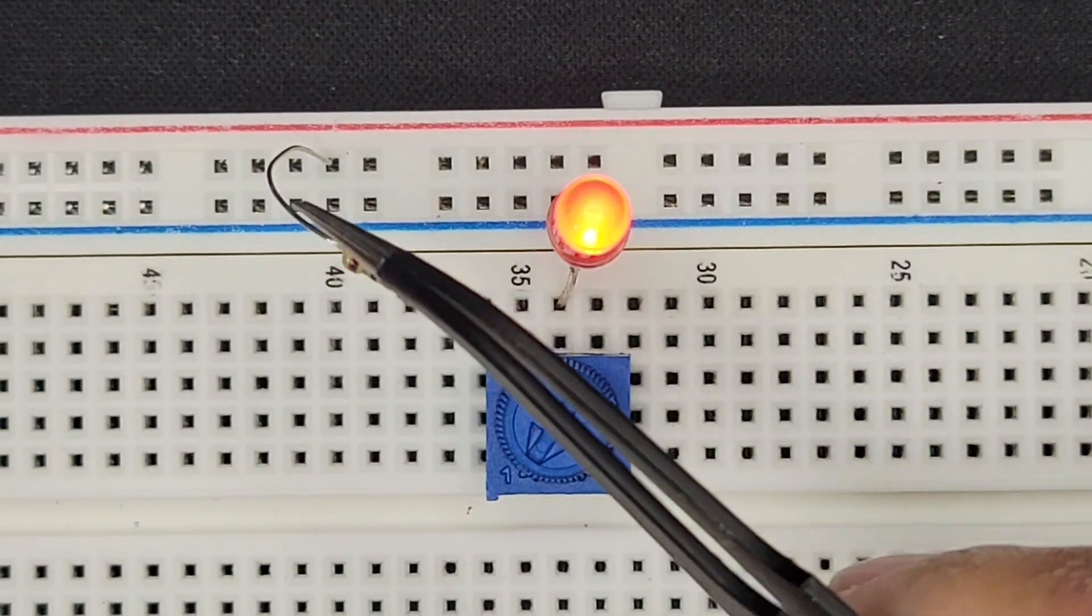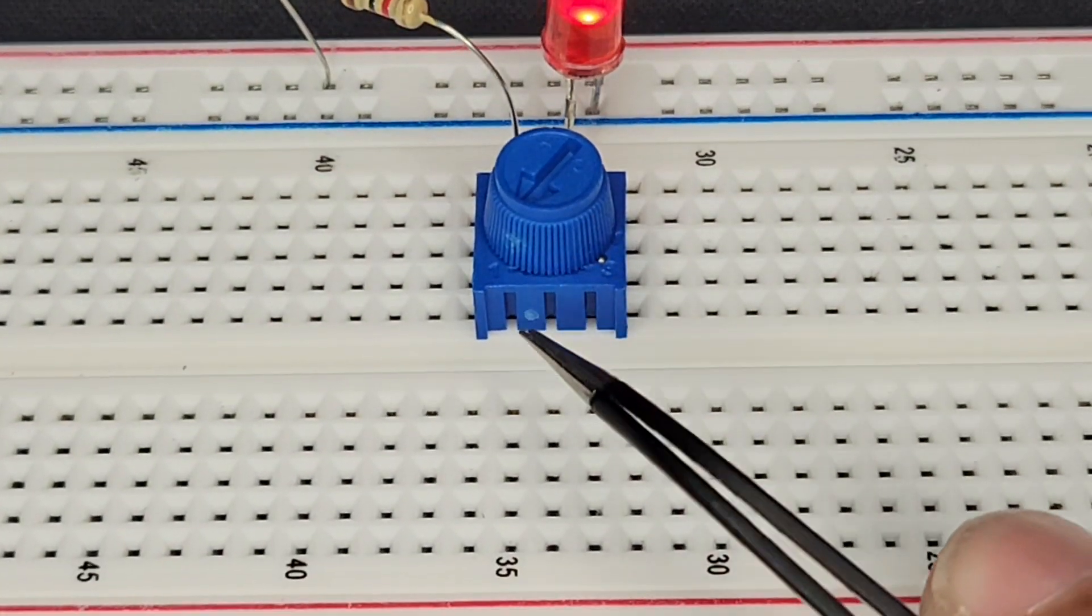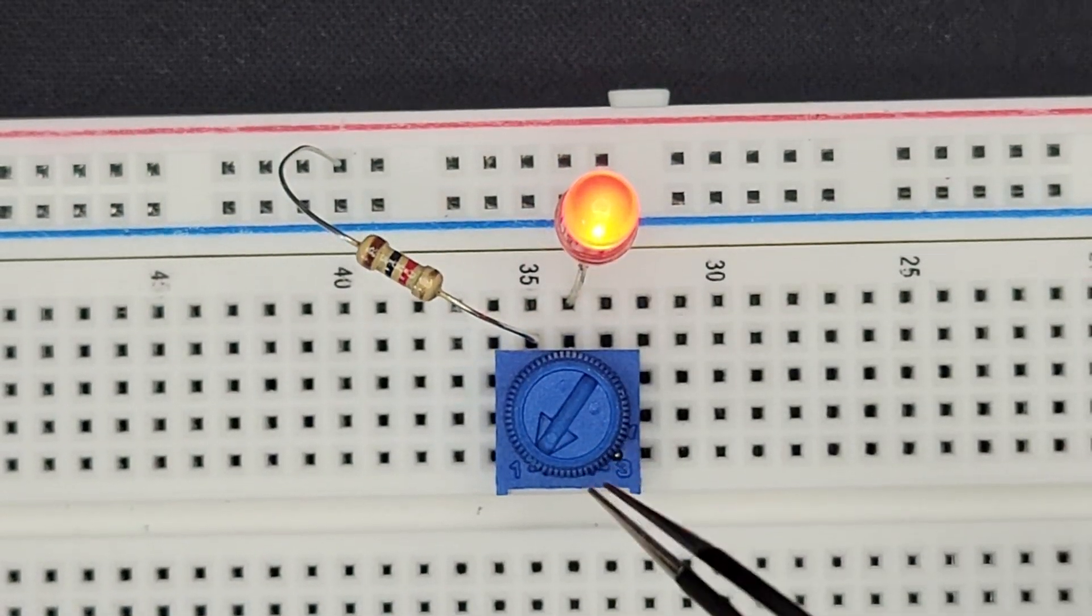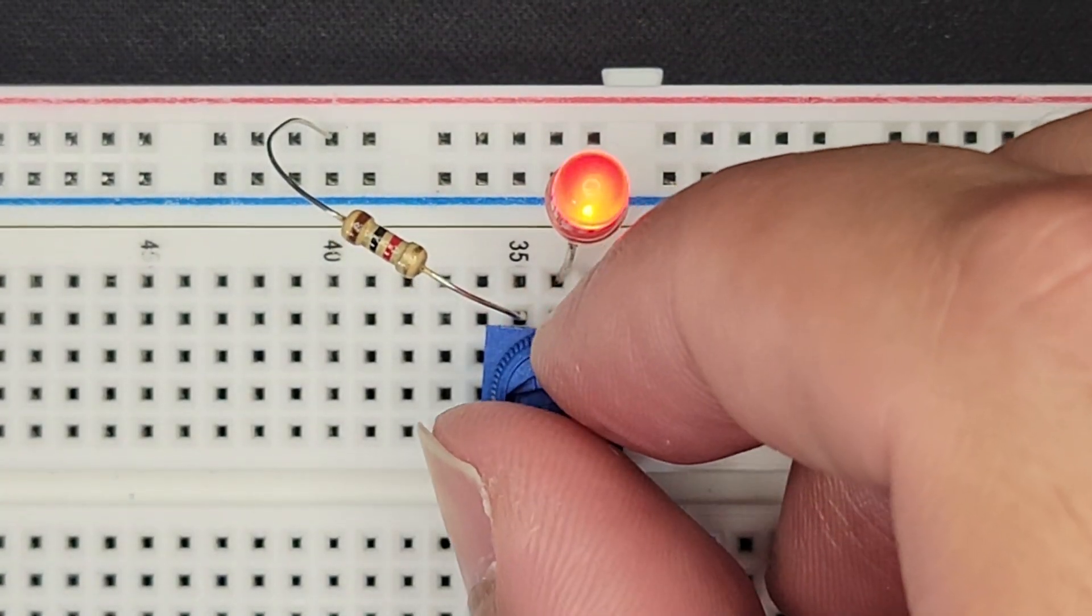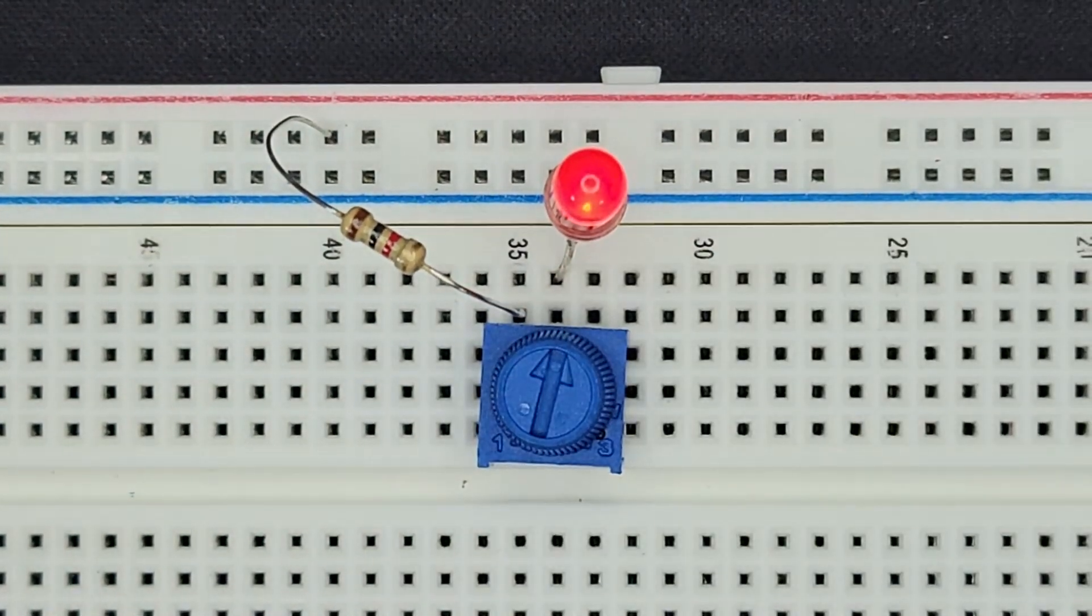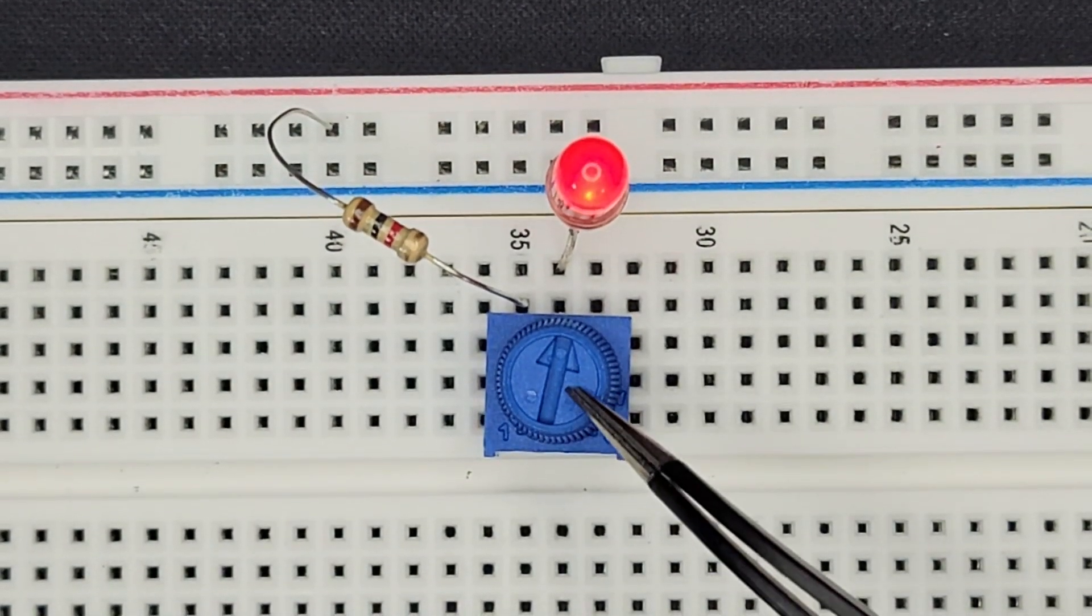So lights on, we have power coming into the resistor and it's going to the leftmost pin of the potentiometer and then coming out of the center pin, which is called a wiper. If we turn this up, oh, it's backwards. So we can see the resistance. We're turning up the resistance, dimming the LED.